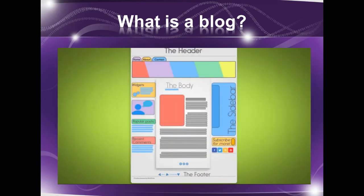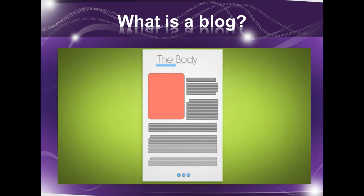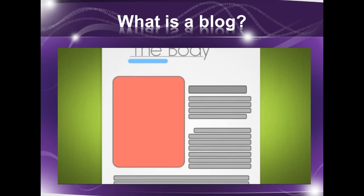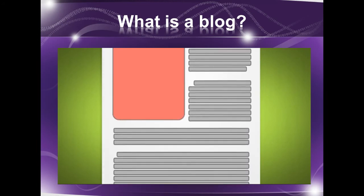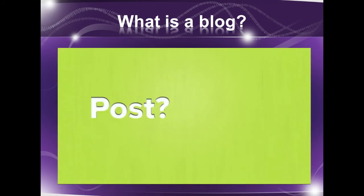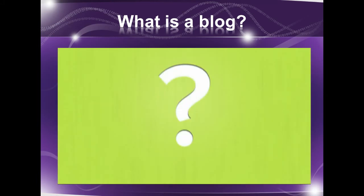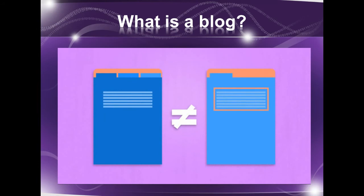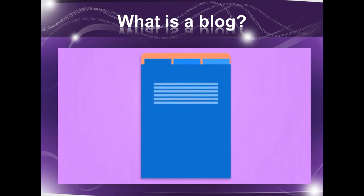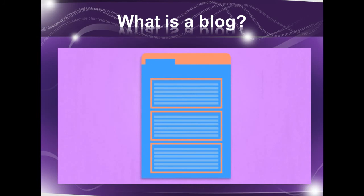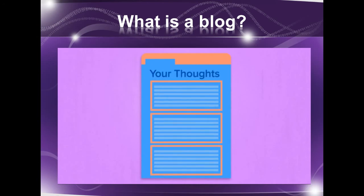The most important area of your blog is the body — the main content area. Usually this is the primary reason people have come to your blog; it's where your thoughts and ideas come to life within a post or page. Pages are different from posts; they're normally static, displaying standard content such as an about me or contact page. Posts, on the other hand, are where you publish your thoughts.